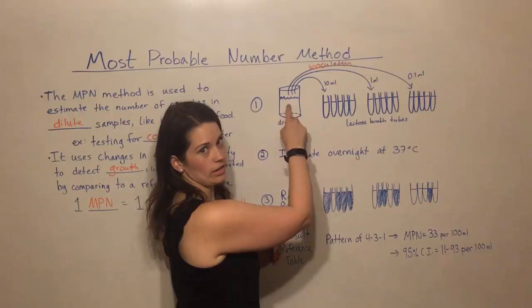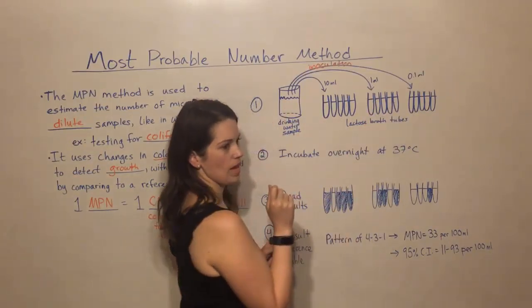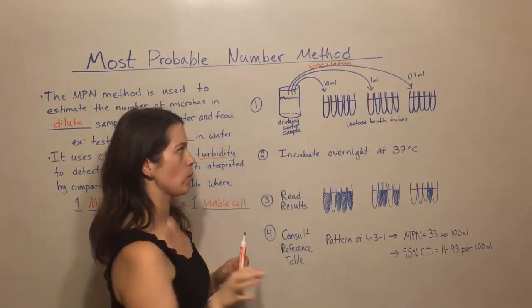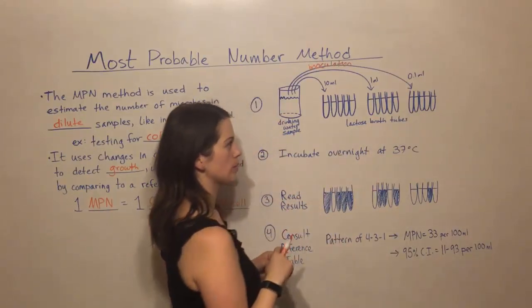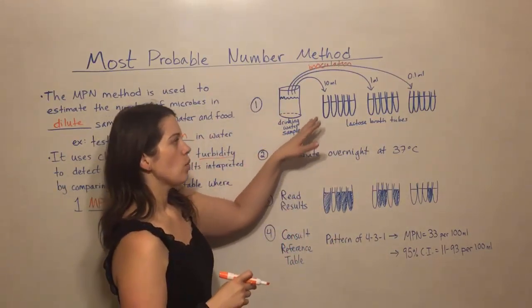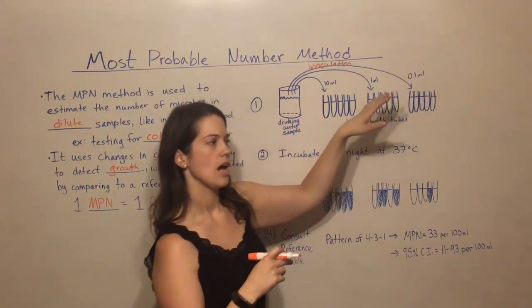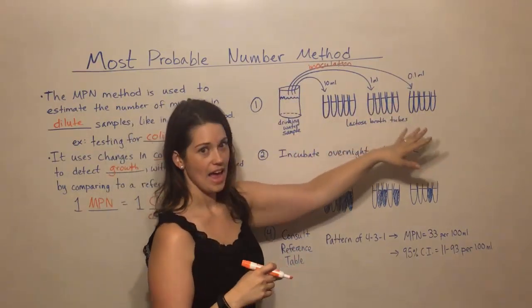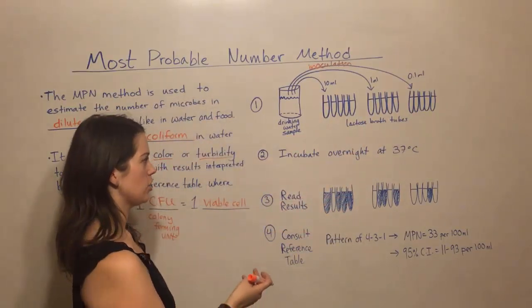Then we take one milliliter of the water sample and add it to each of these tubes. And then we take 0.1 milliliters of water from the sample and add it to each of these tubes. So we're having this 10-fold decrease each time in the amount of water that's being added, and theoretically in the amount of viable coliforms that are being added to these tubes.